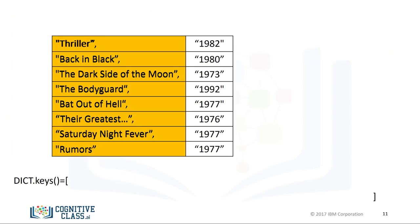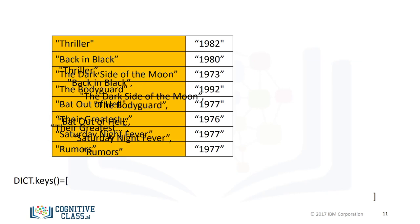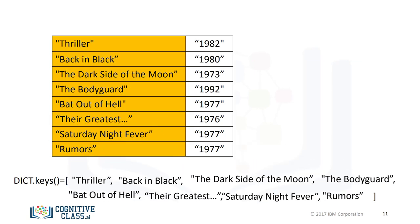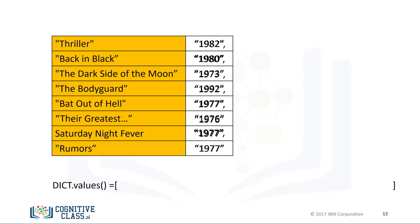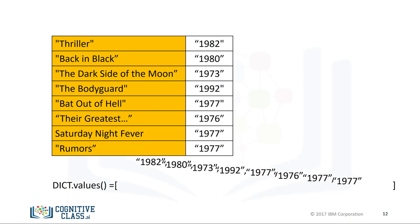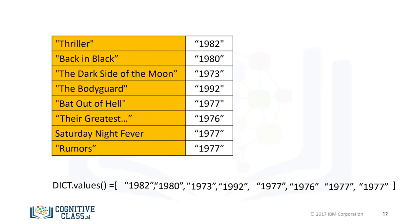In order to see all the keys in a dictionary, we can use the method 'keys' to get the keys — the output is a list-like object with all the keys. In the same way, we can obtain the values using the method 'values'. Check out the labs for more examples and info on dictionaries.